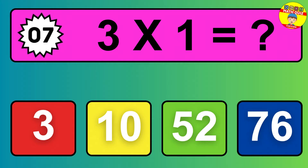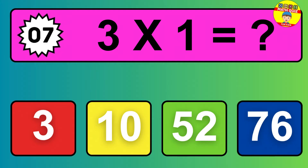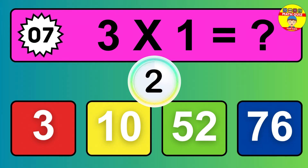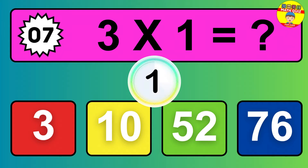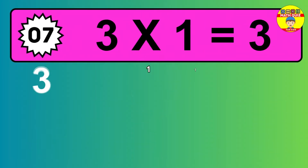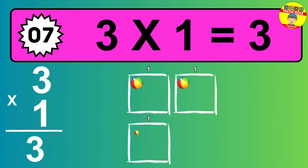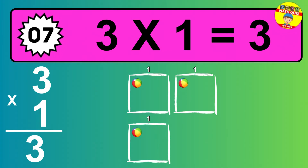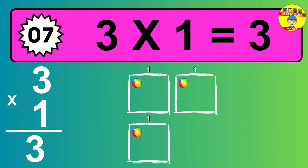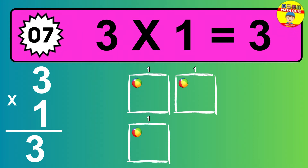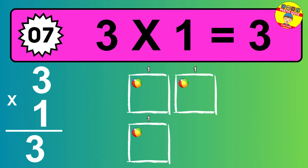Question 7. 3 times 1 equals what? The answer is 3 times 1 is 3. To calculate, we have 3 groups with 1 ball each one. So how many balls do we have? 3 balls.